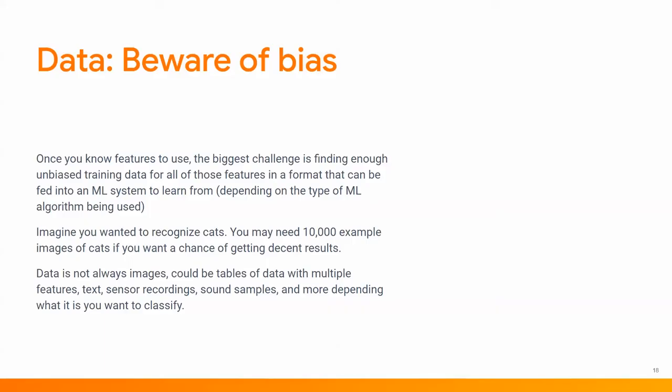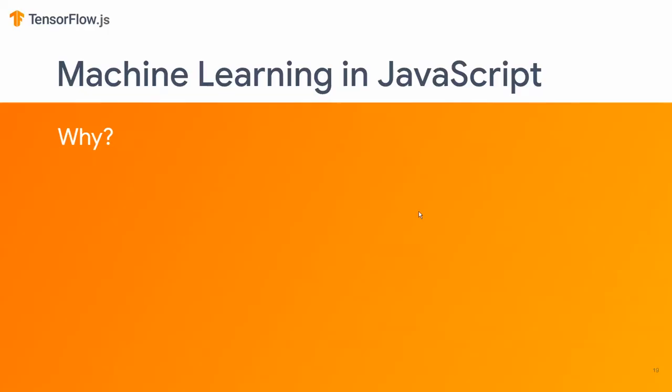Data is not always imagery. It could be tables of data with text, sensor recordings, sound samples, and pretty much anything else you can think of. As long as it can be represented numerically, we can use it in an ML system. And that brings us, of course, to JavaScript.